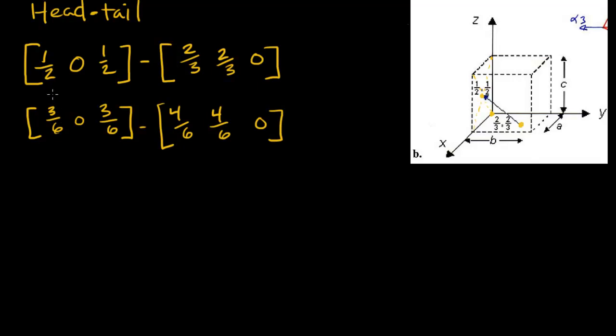Now we can perform subtraction. We'll subtract the vectors in their respective directions from each other. So 3/6 minus 4/6 equals negative 1/6. 0 minus 4/6 is negative 4/6 or negative 2 thirds. And then 3/6 minus 0 is going to be 1 half.